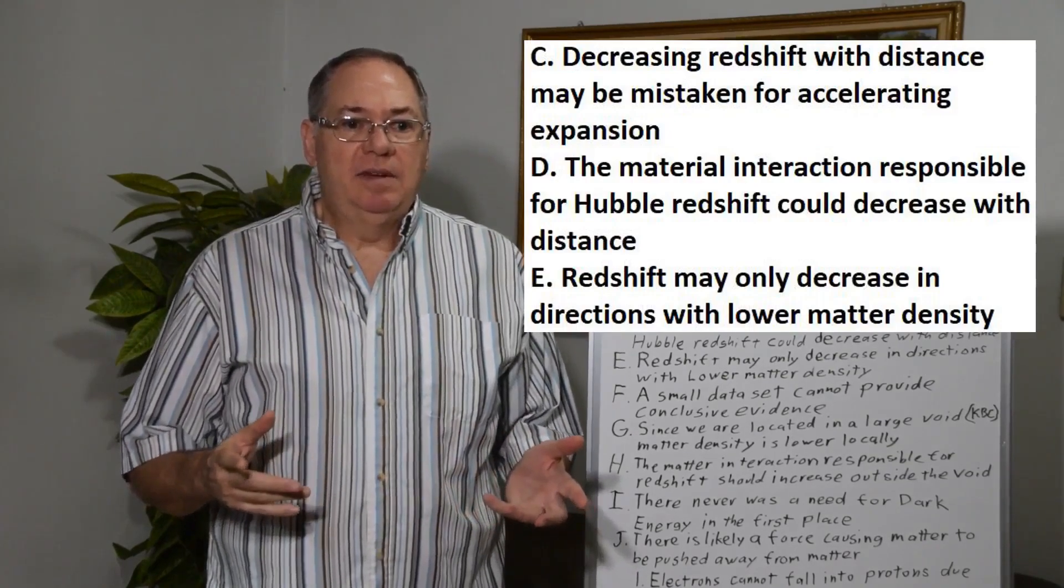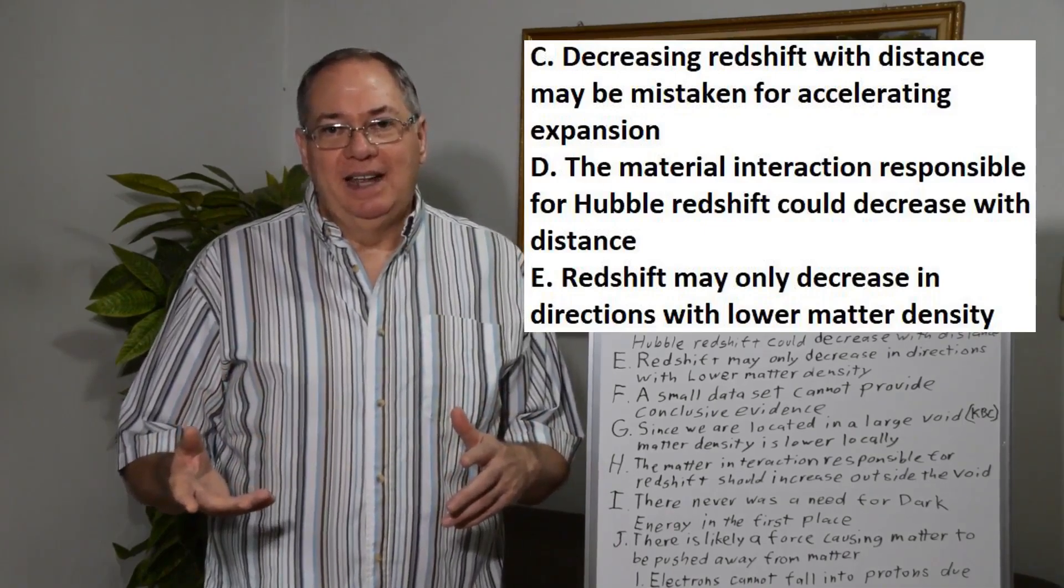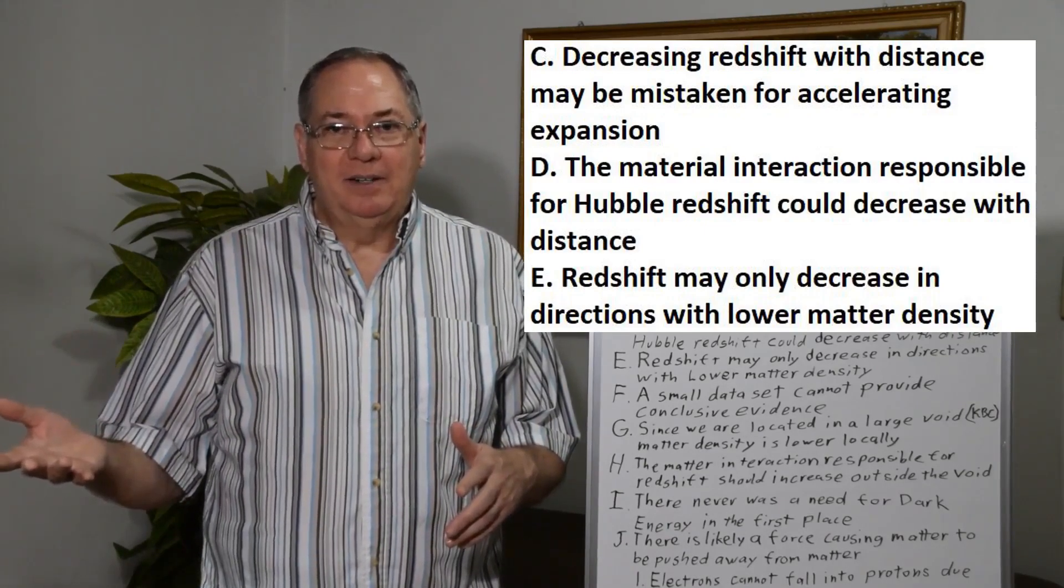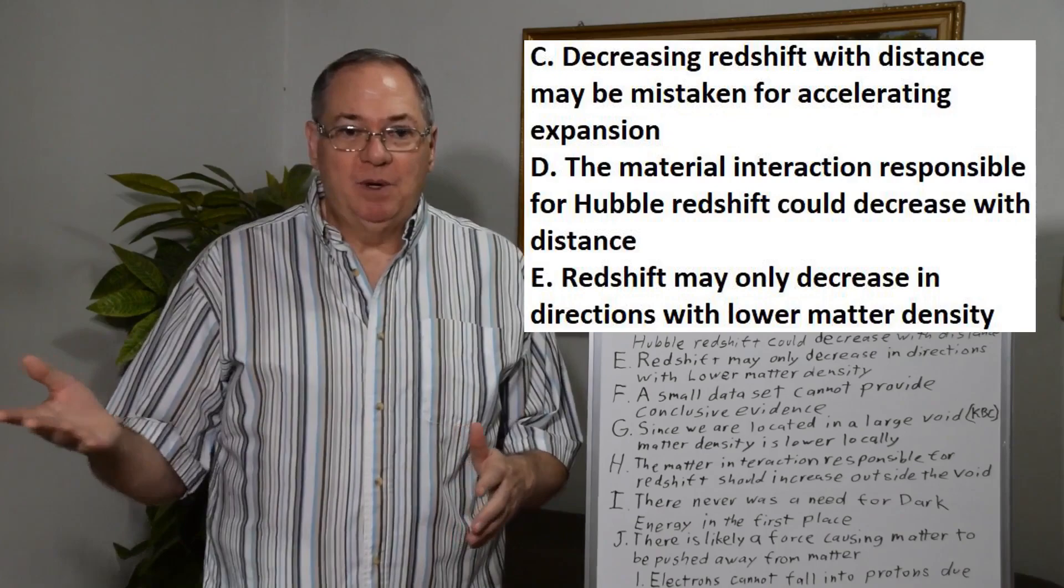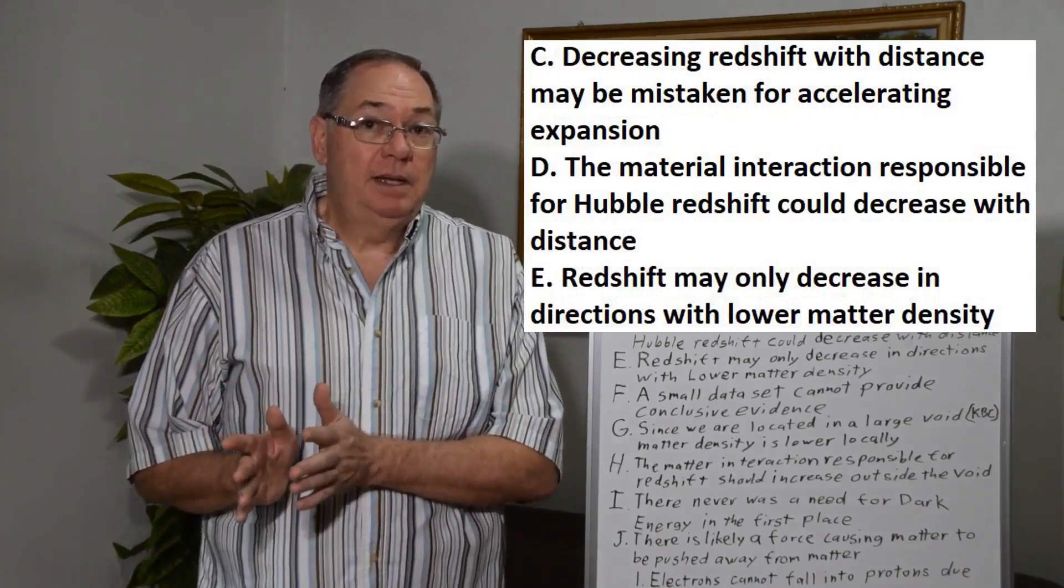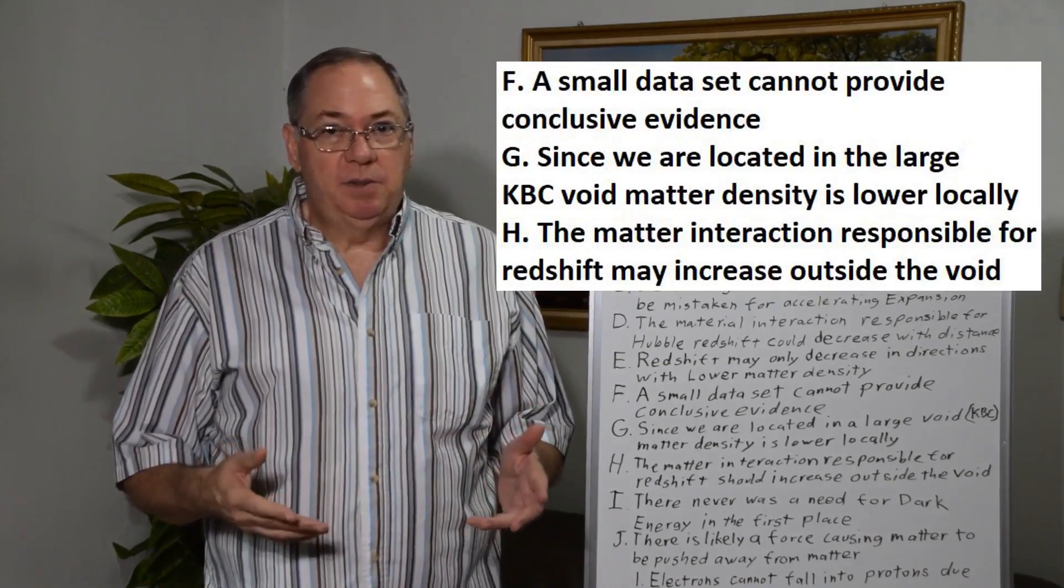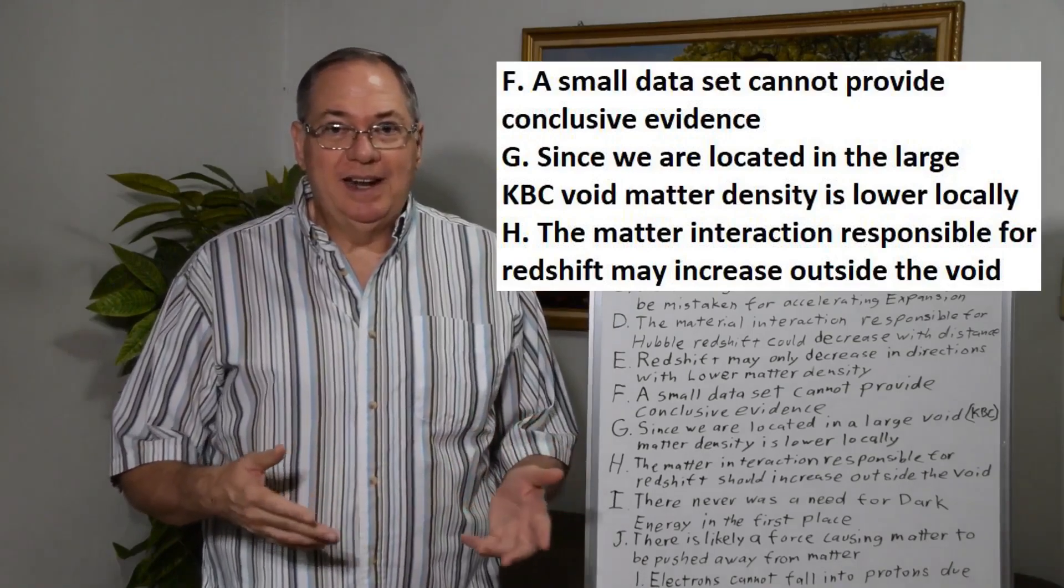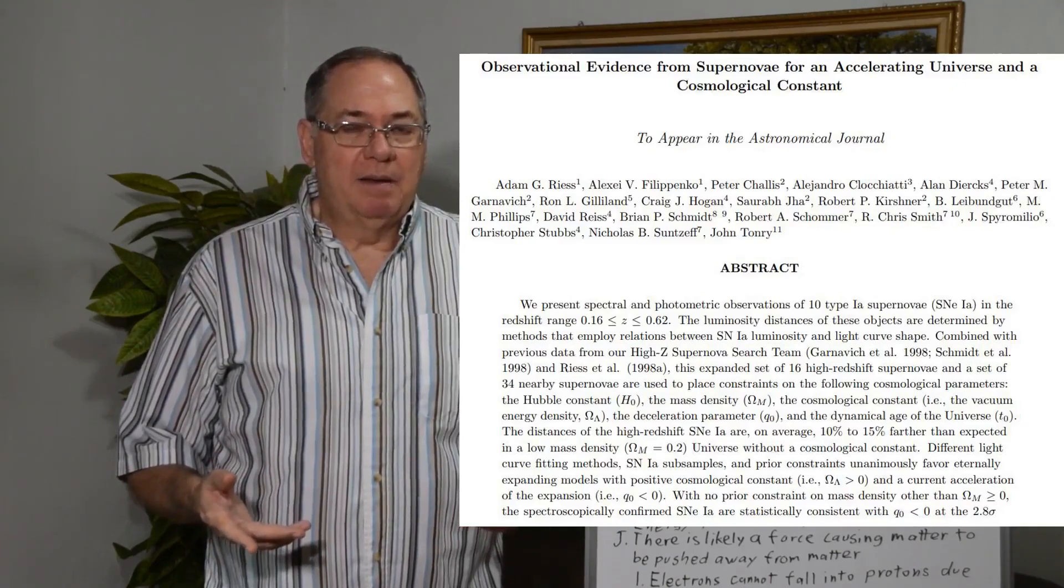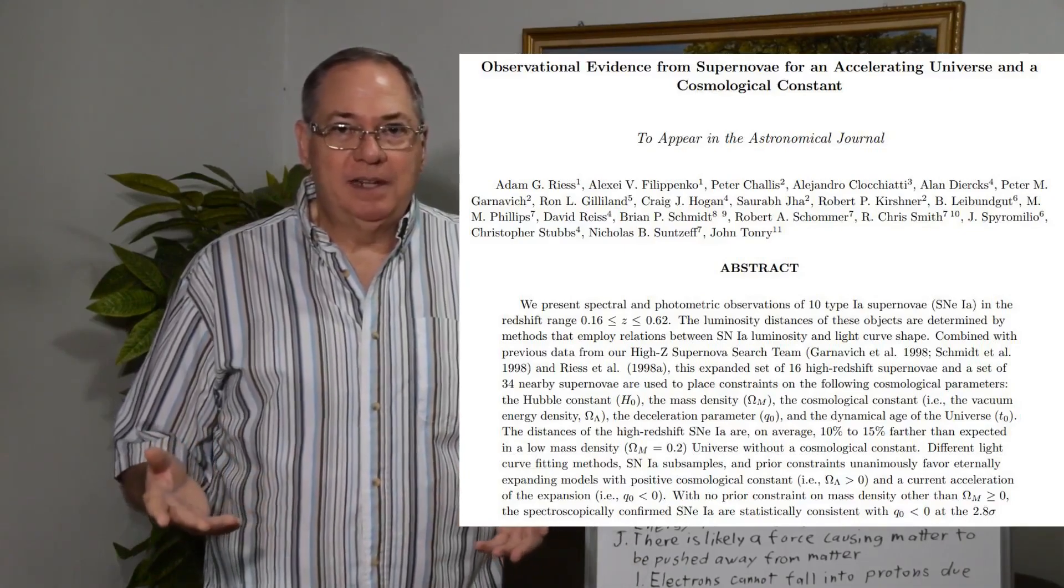So we could have redshift that's decreasing because there's a low density area of matter in the distance in which we're looking, in which case it can be highly directionally dependent. And this also means that a small dataset such was originally used in the 1998 paper is not really appropriate for making broad conclusions about accelerating or decelerating expansion in the universe.